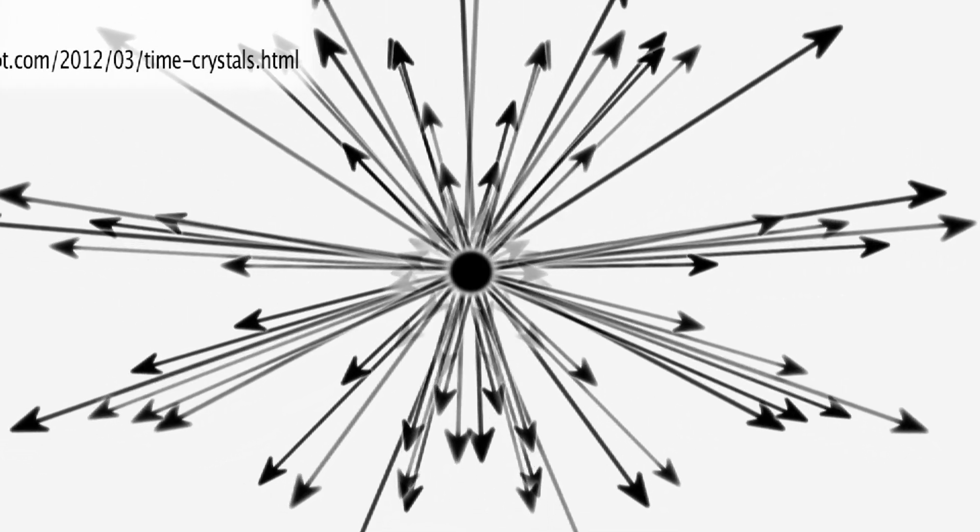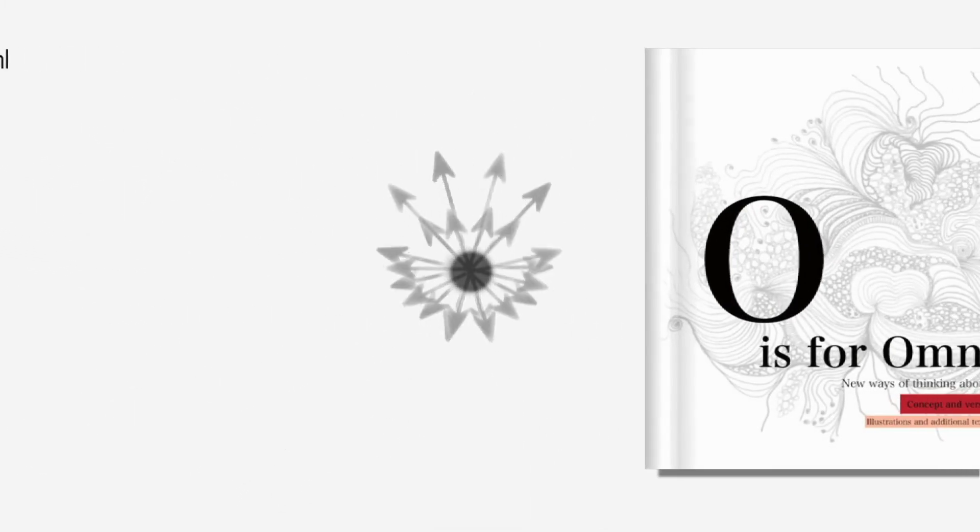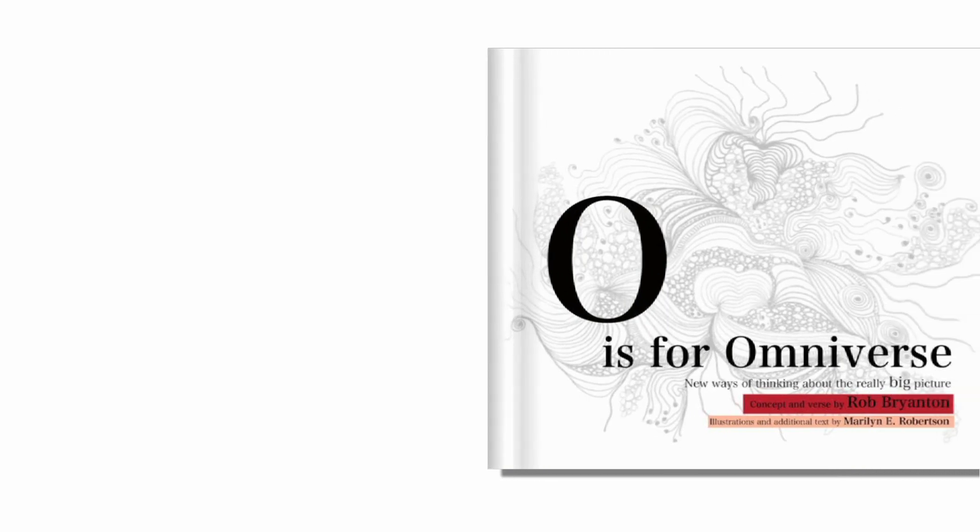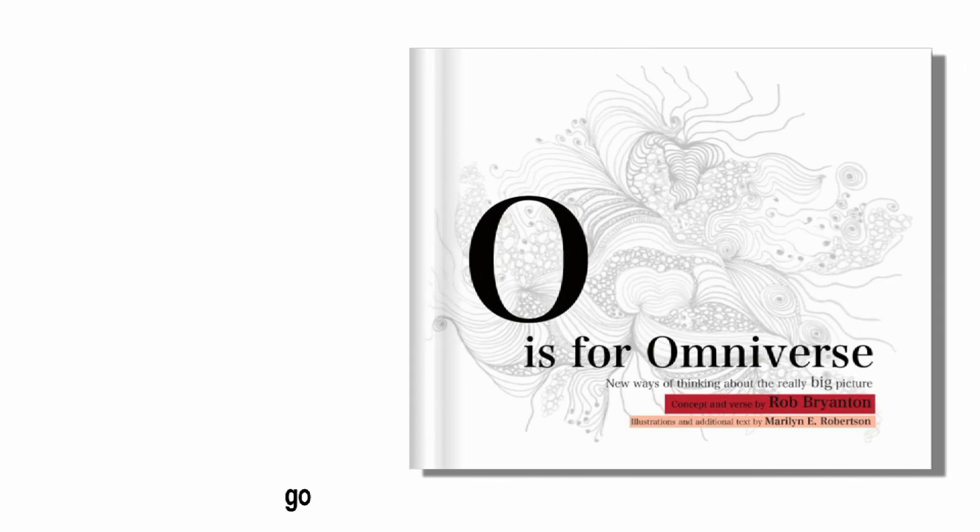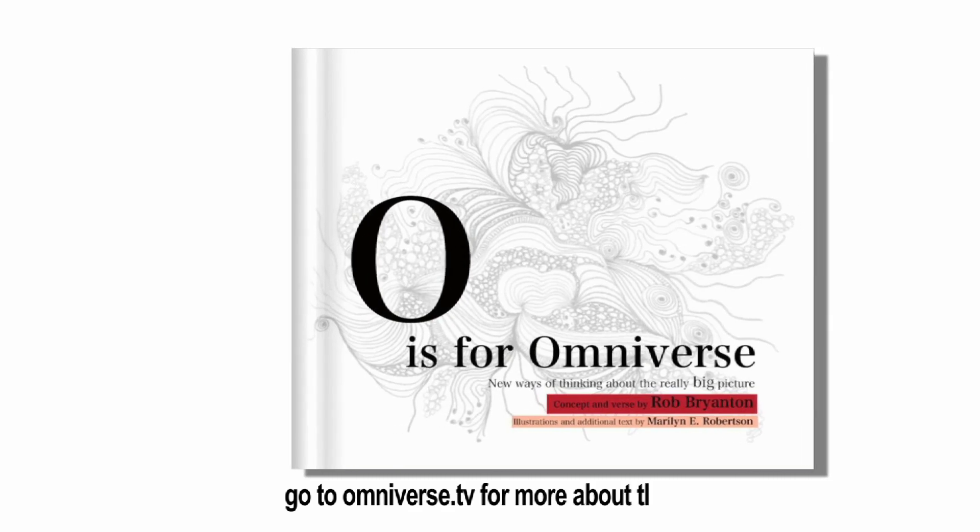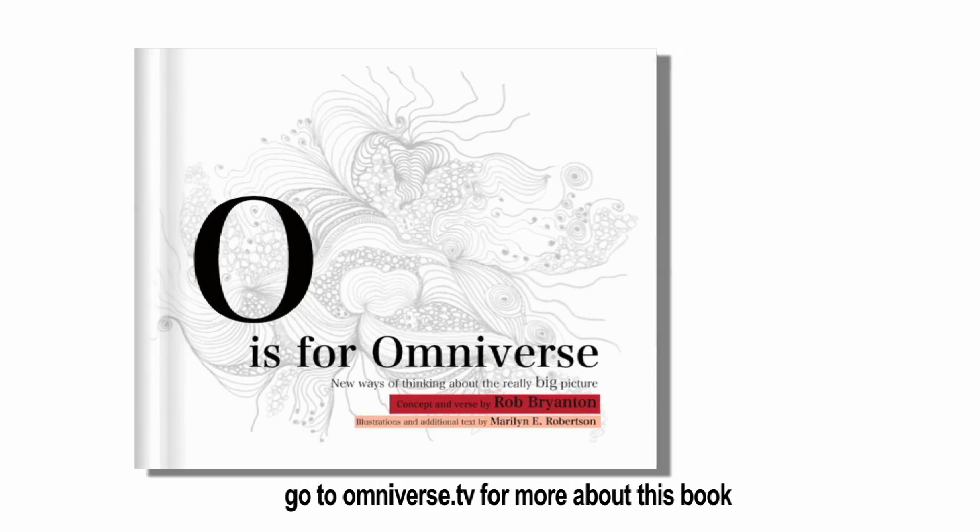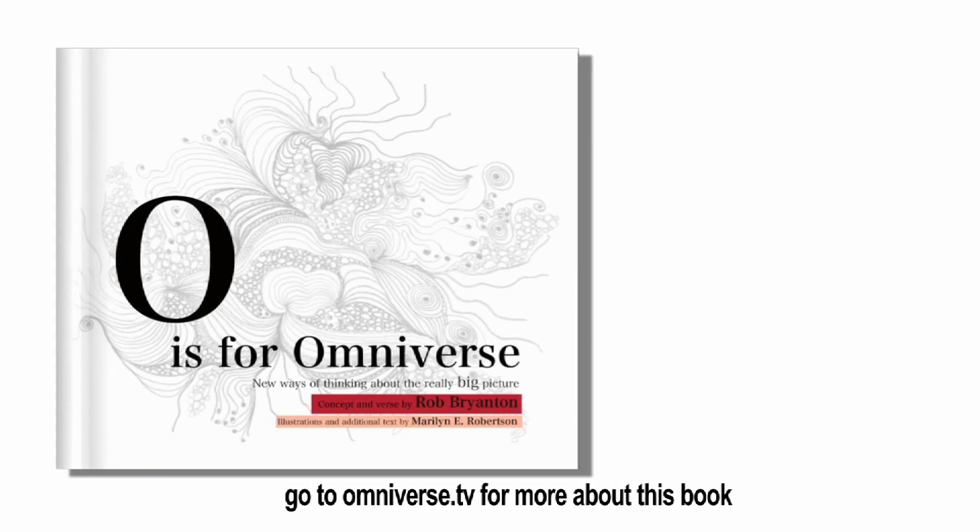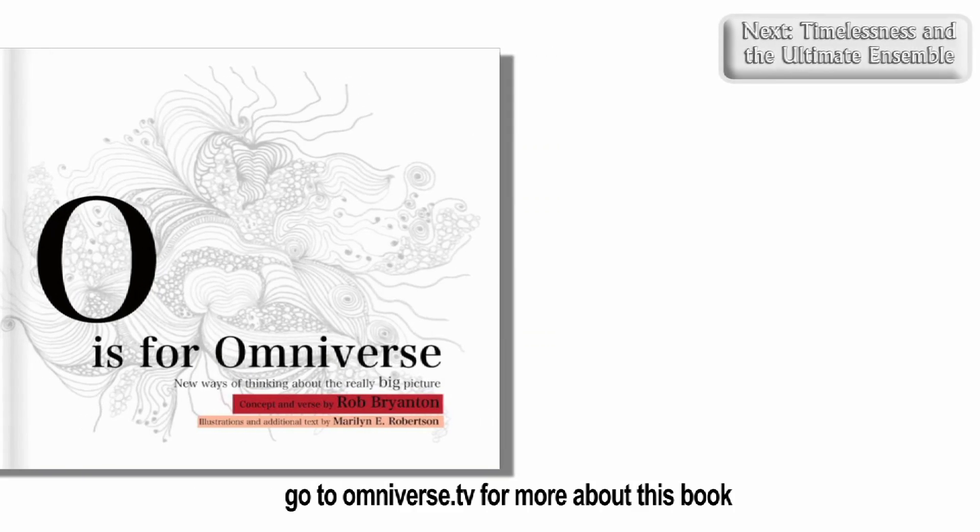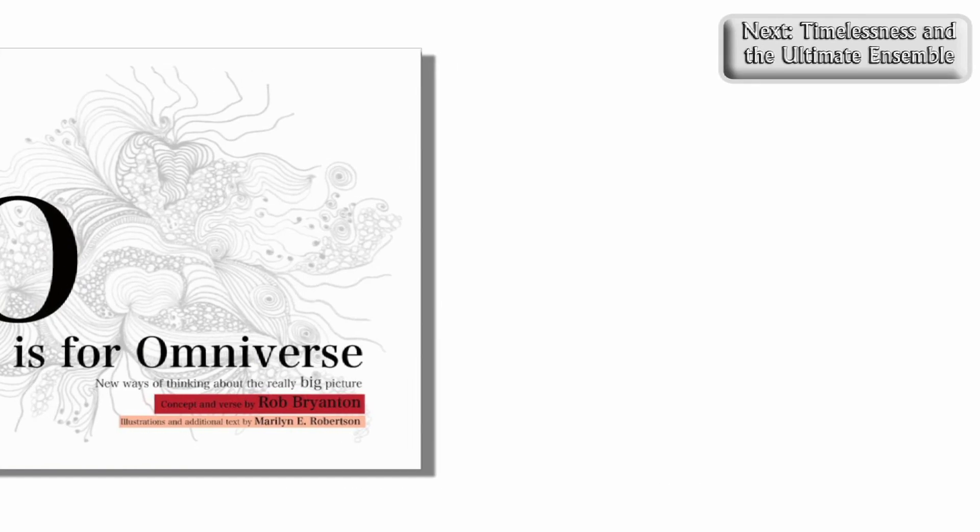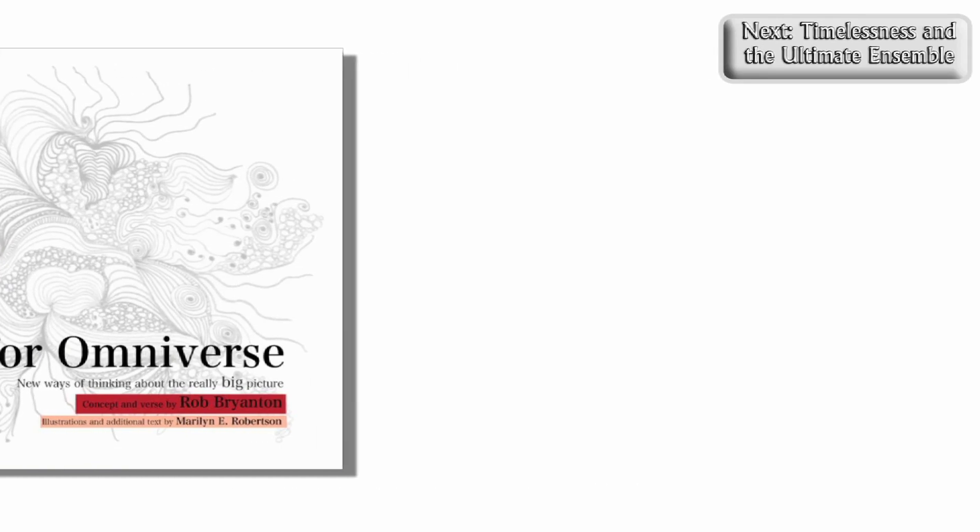In my follow-up book to Imagining the Tenth Dimension, a collaboration with visual artist Marilyn E. Robertson called O is for Omniverse, we devoted the letter J to John Wheeler. I'd like to finish by showing the video for letters I and J from that book, and you can see a lot more if you go to omniverse.tv. Next time, we're going to look at Timelessness and the Ultimate Ensemble.